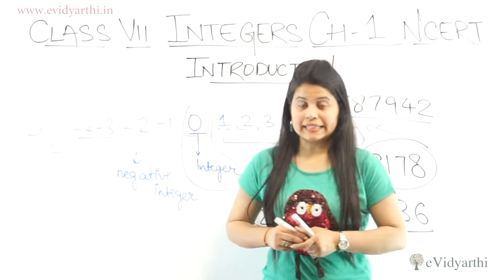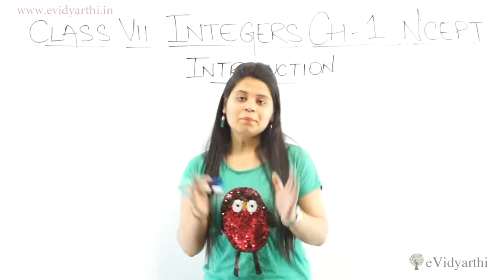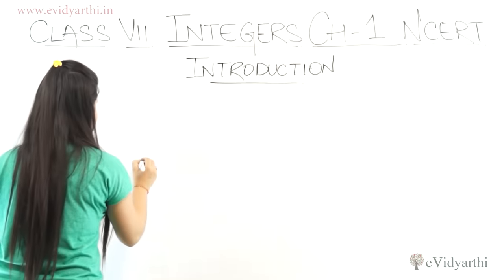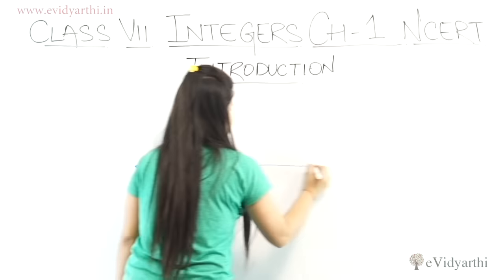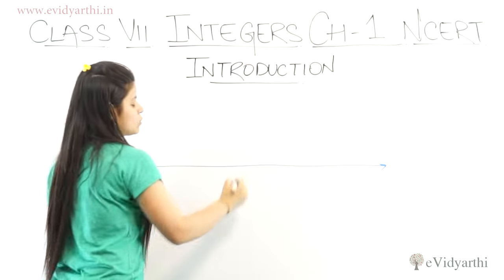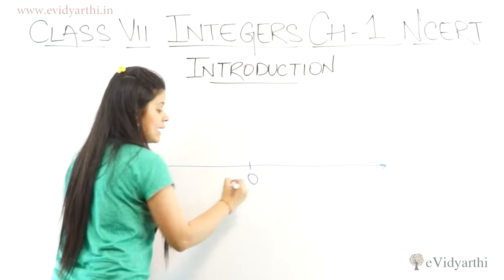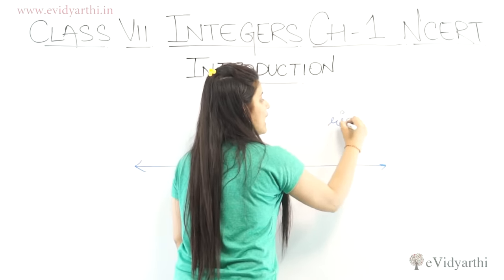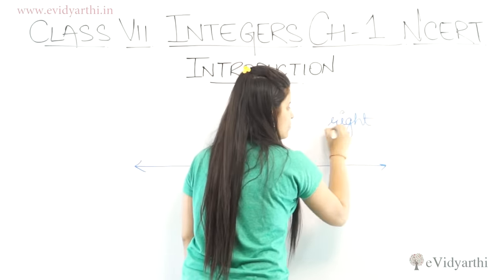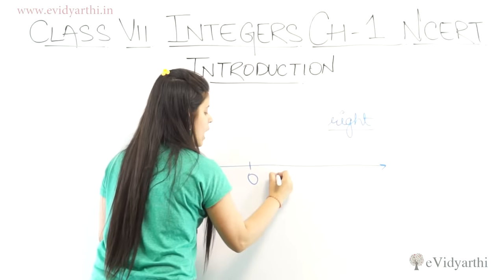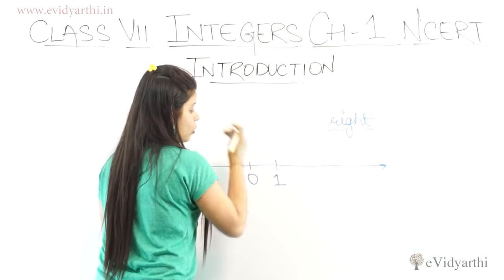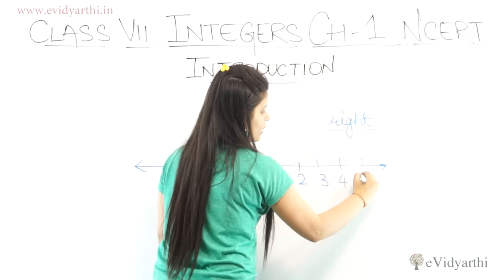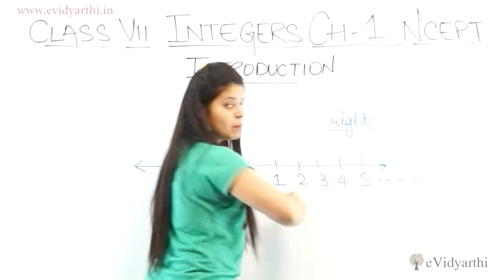Now in integers, we will see how to plot on a number line. In the number line, we plot integers with 0 in the center. On the right-hand side are all the positive numbers: 0, 1, 2, 3, 4, 5, and so on — these are positive numbers.